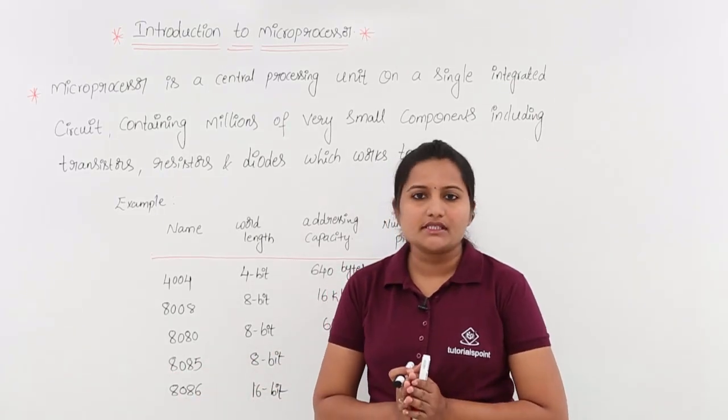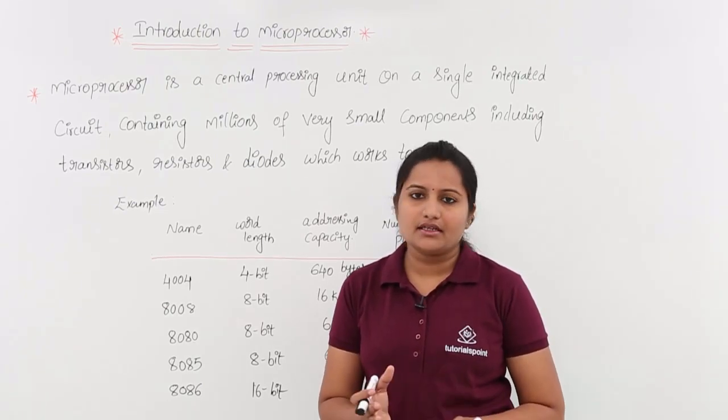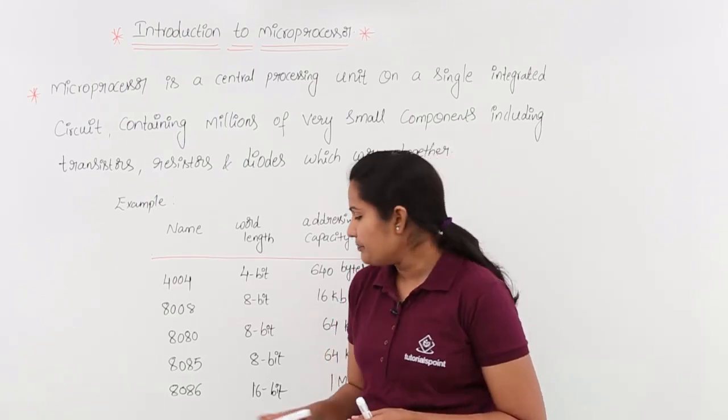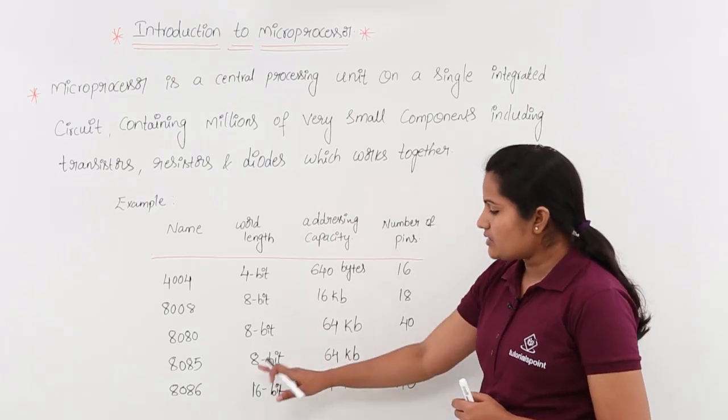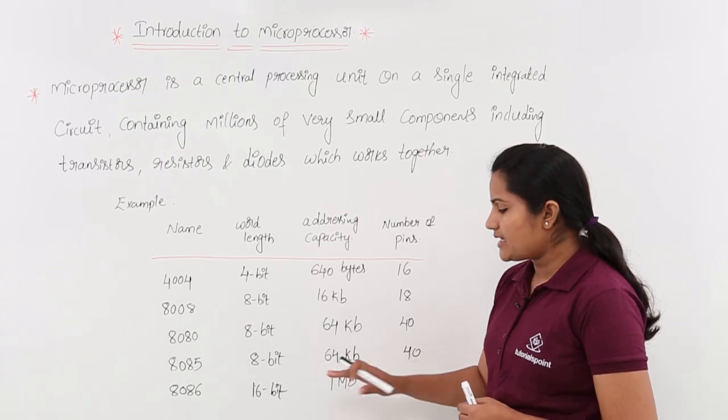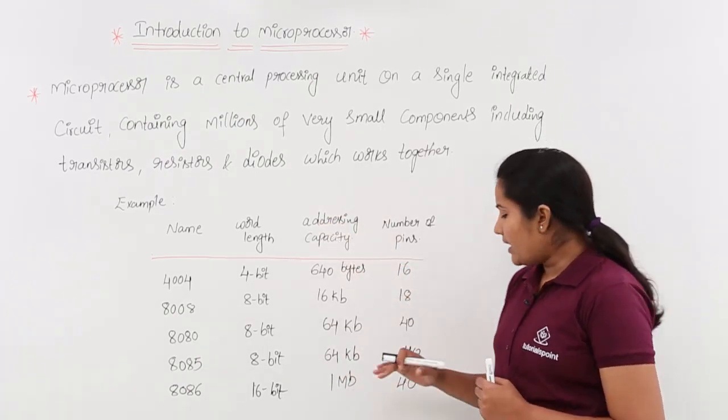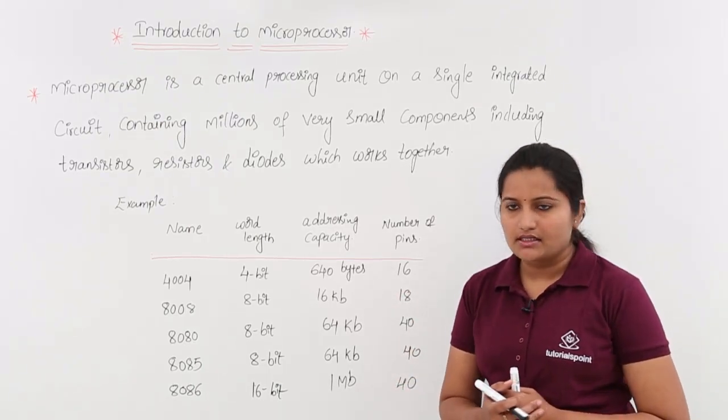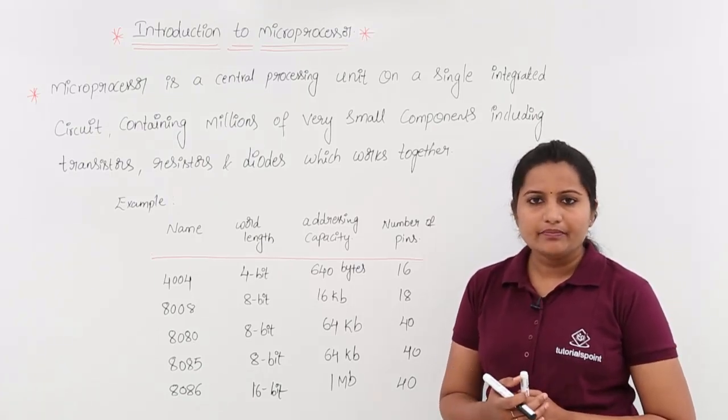Coming to 8085, this is very important microprocessor that we need to discuss because in any technical exam they will ask 8085 and 8086 only. Here for 8085 microprocessor, this is also 8-bit word length. That means 8-bit microprocessor, and here it is having 64 KB addressing capacity. And coming to the number of pins, from here onwards you are having 40 pin ICs. That means for 8085 IC, we are having 40 pins.